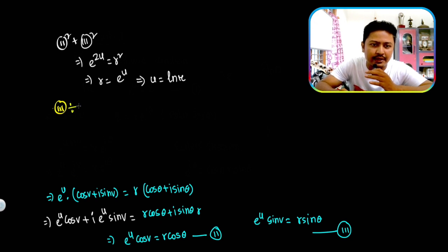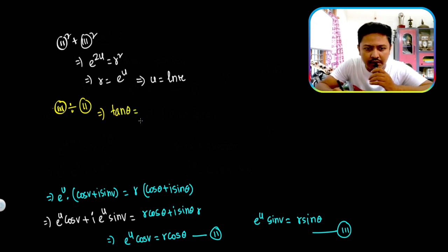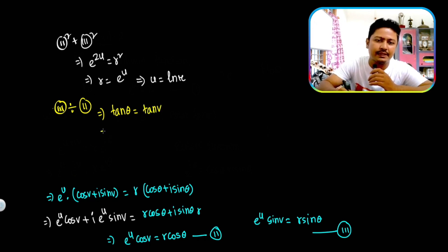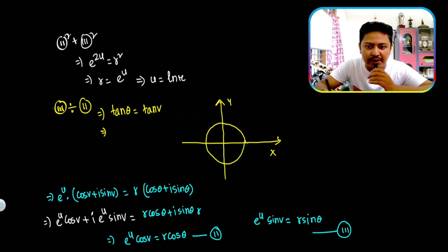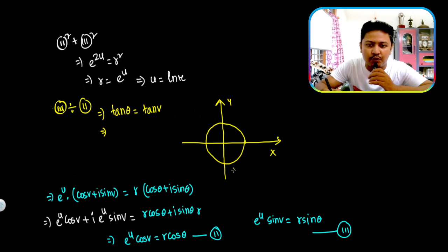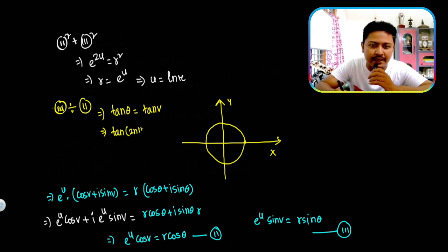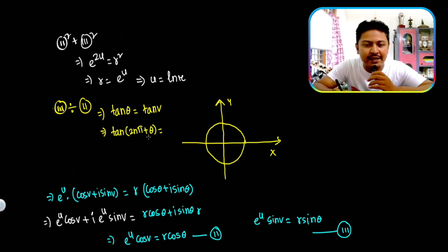Now take equation number 3 divided by equation number 2. We get tan theta equals sin v over cos v, which is tan v. The trigonometric function repeats after a complete rotation of 2π, so tan v equals tan(2nπ plus theta), which means v equals 2nπ plus theta.